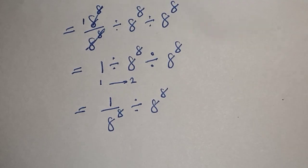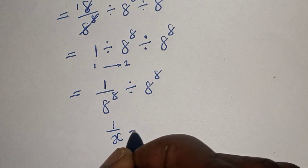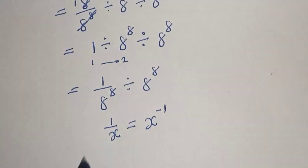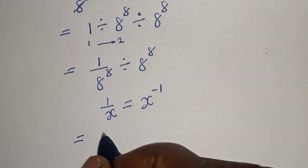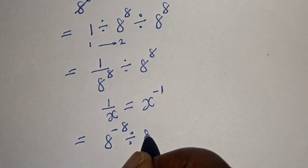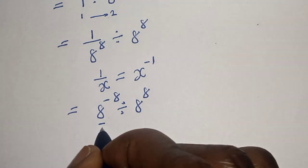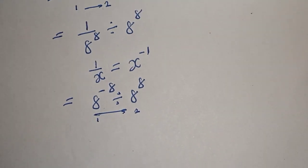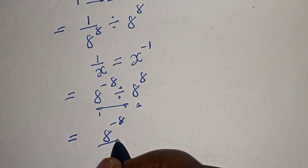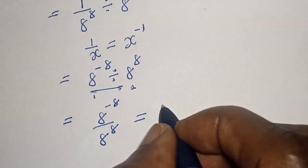Take note of this: if you have 1 over s, this is equal to s raised to power minus one. Then this becomes 8 raised to power minus 8 divided by 8 raised to power 8. This is equal to 8 raised to power minus 8 over 8 raised to power 8.